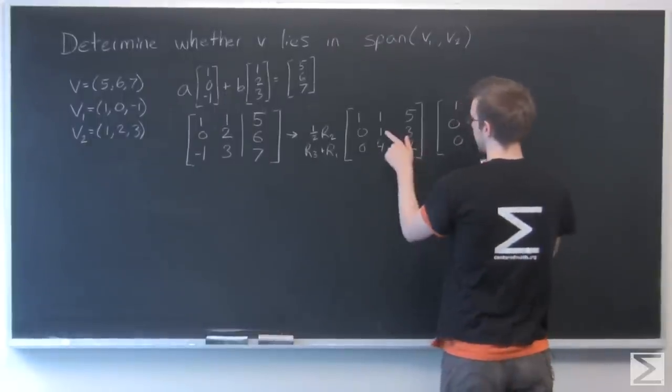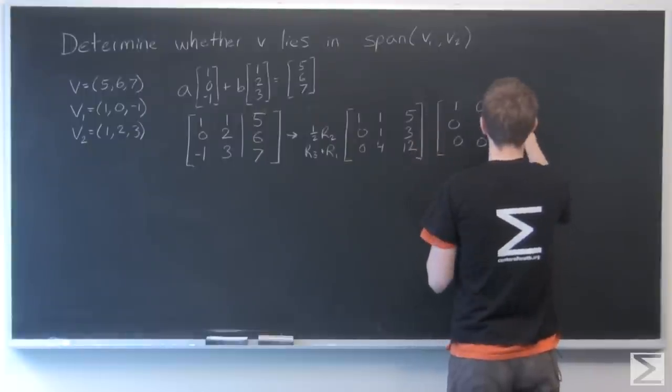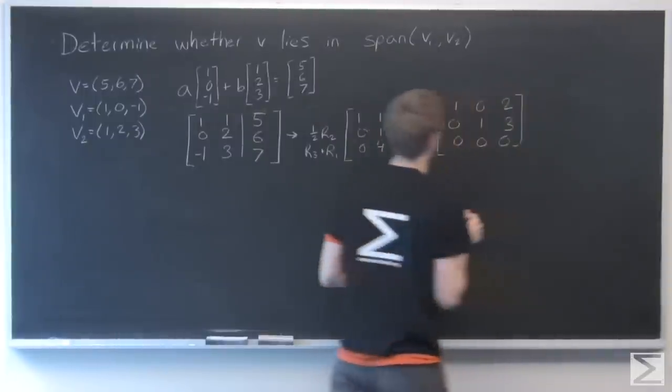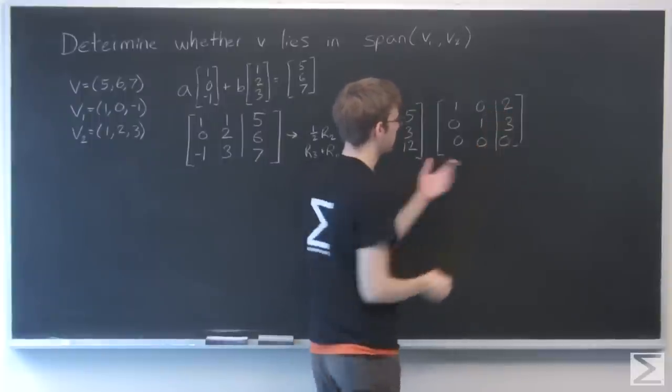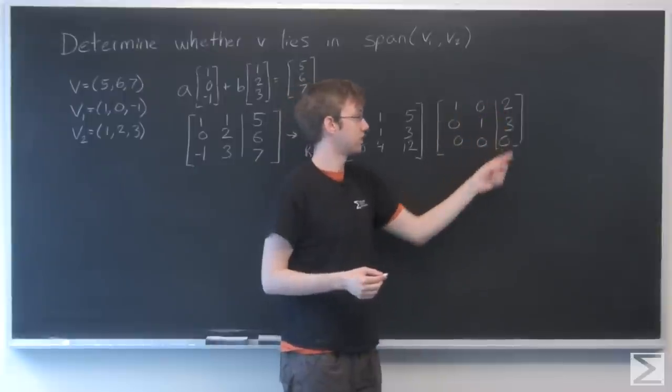So I have 1, 0, 2; 0, 1, 3. So there's my solution matrix. Here I see that A equals 2 and B equals 3.